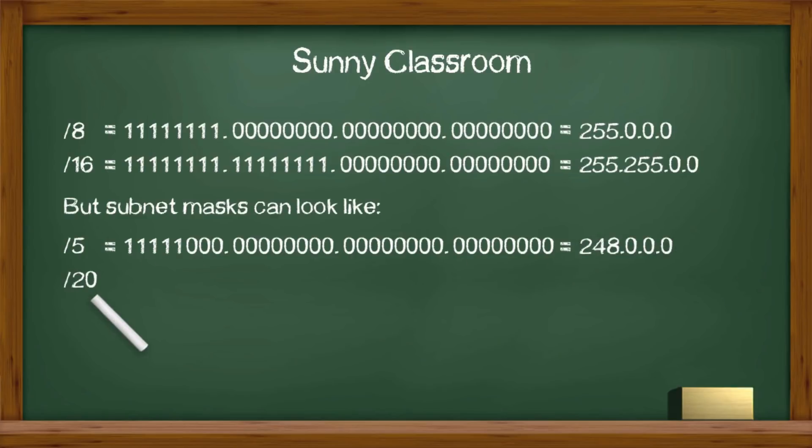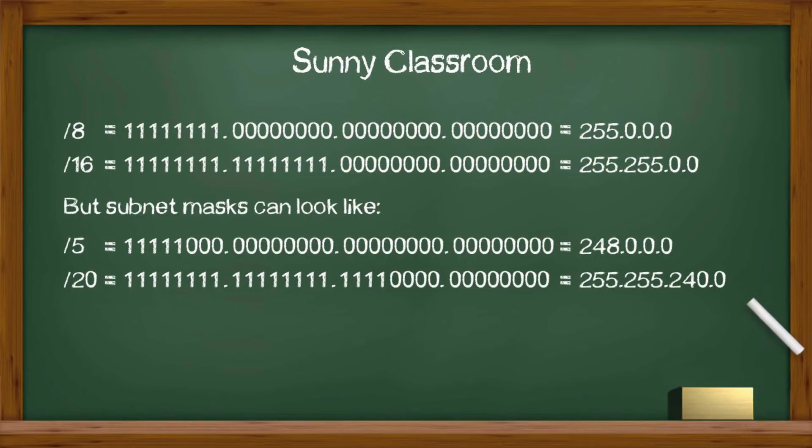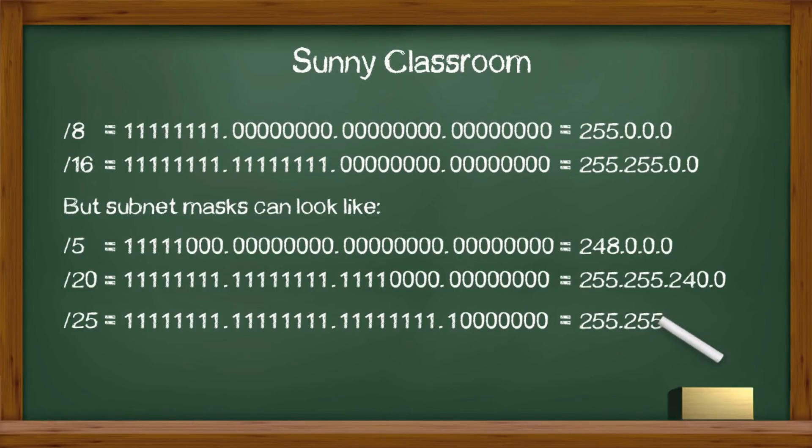Slash 20 means the subnet mask has 20 ones followed by 12 zeros. In decimal format, it is 255.255.240.0. One more example. Slash 25 means 25 ones followed by 7 zeros. In decimal, it is 255.255.255.128.